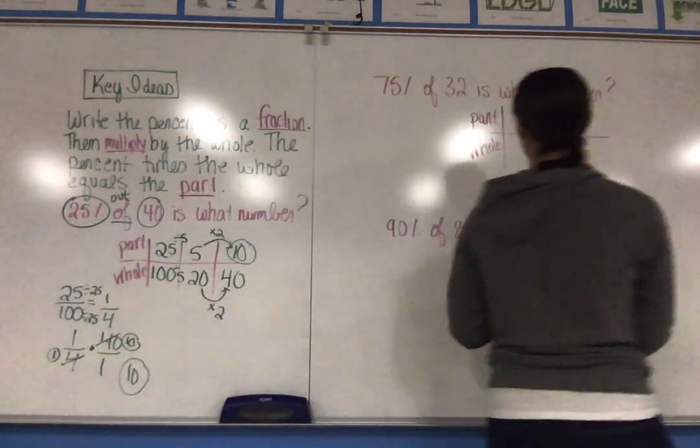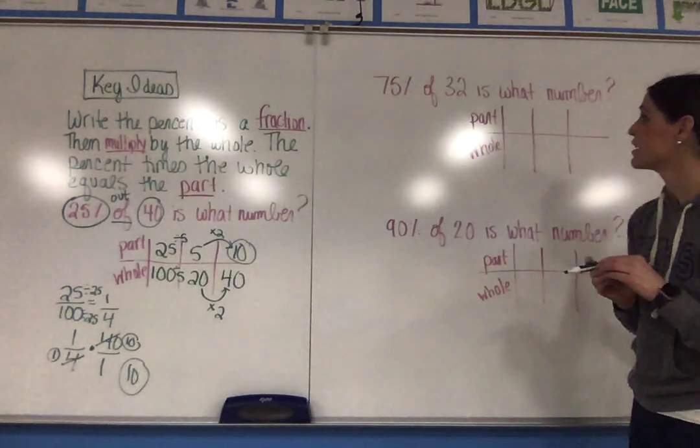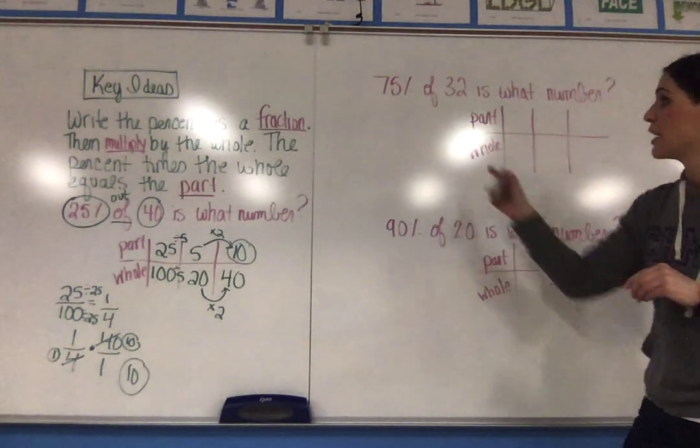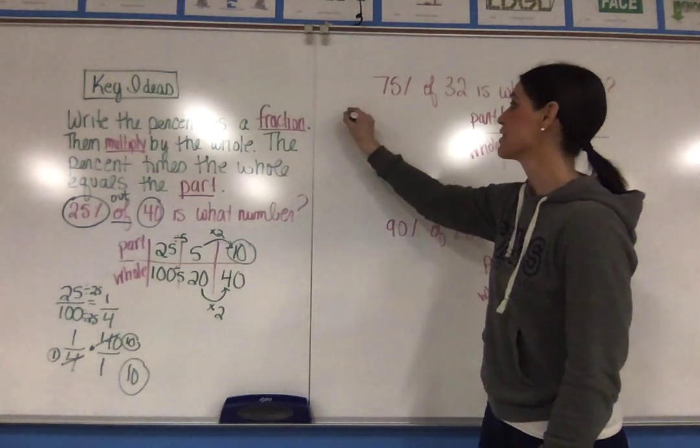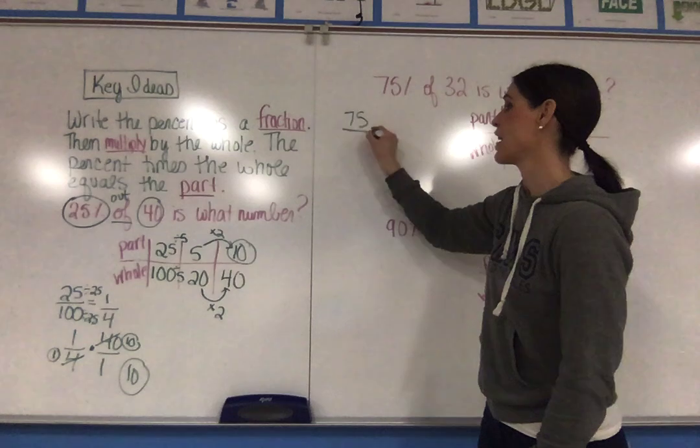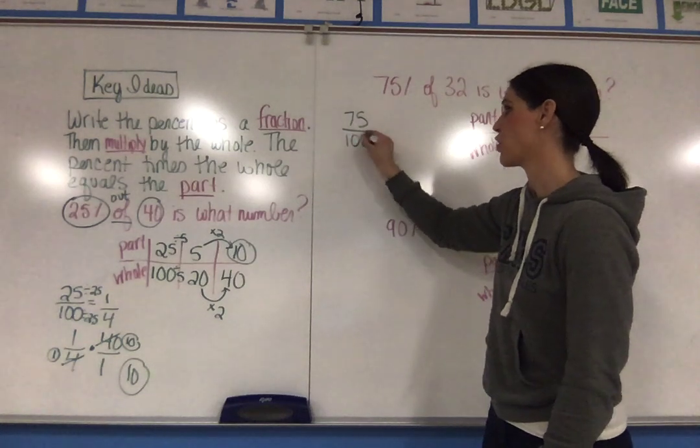Looking at the next example, 75% of 32 is what number? Again, with the first method, I'm going to take my percent and write it as a fraction out of 100 because percents are always out of 100.